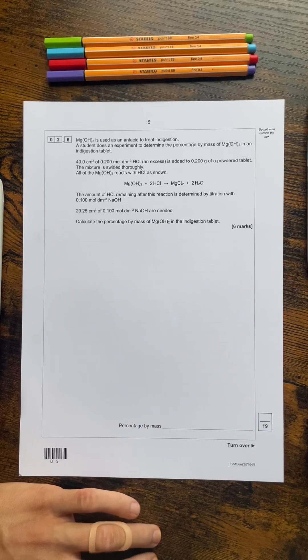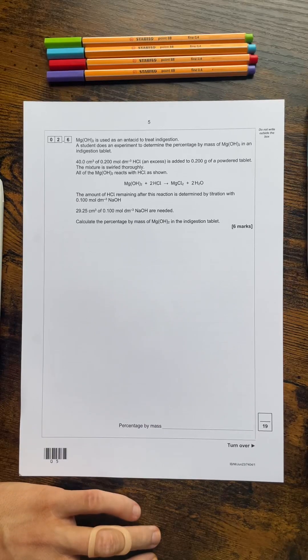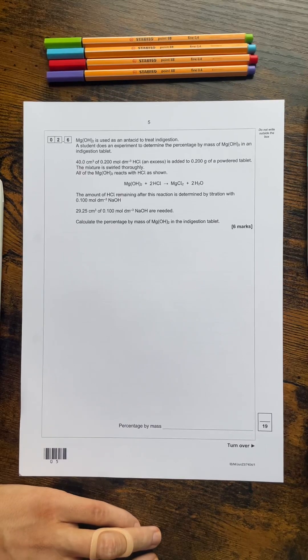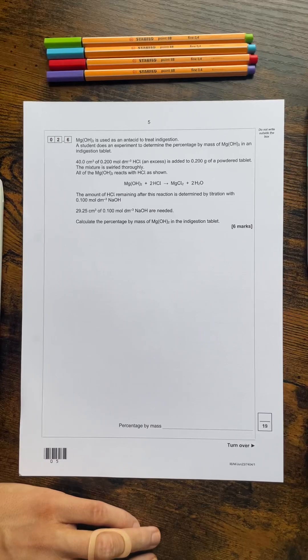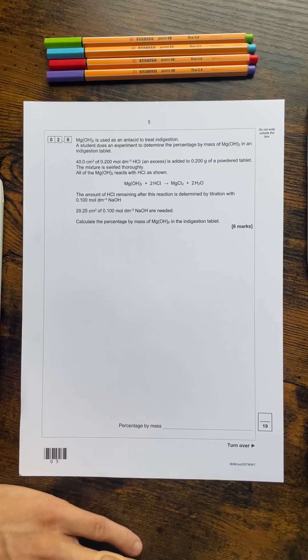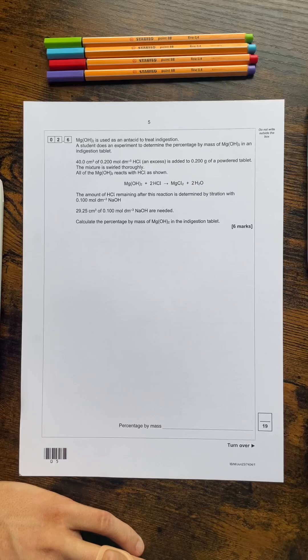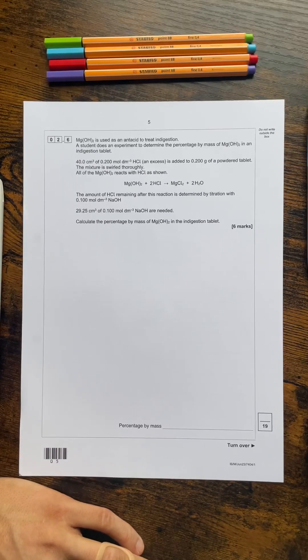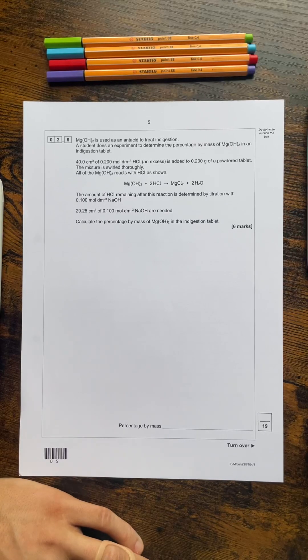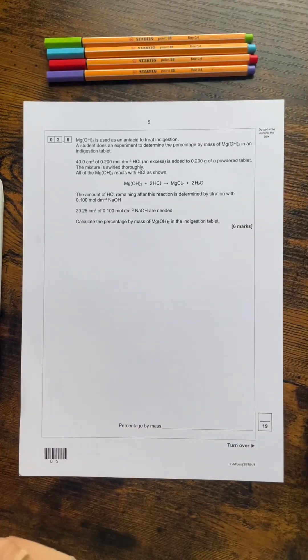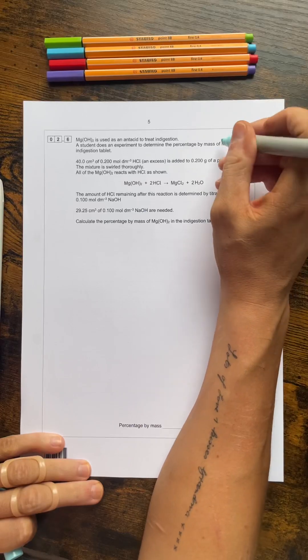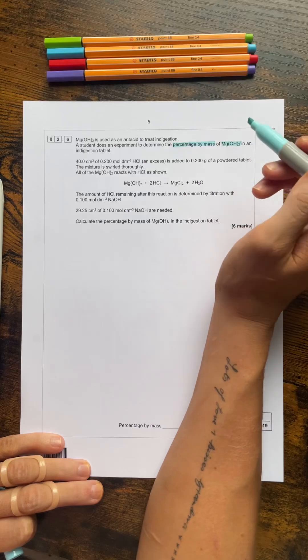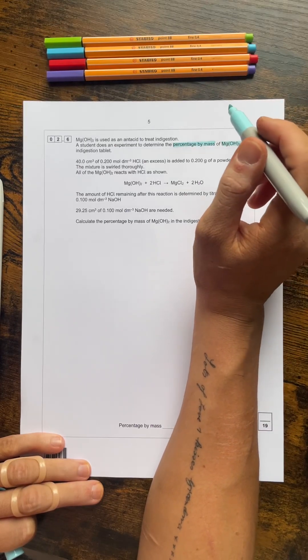So let's go from the top. It tells us that magnesium hydroxide is used as an antacid to treat indigestion and that's knowledge that you'll also need by the way for group 2 chemistry. We're told that a student does an experiment to determine the percentage by mass of magnesium hydroxide in an indigestion tablet. So first thing I'm going to highlight is my magnesium hydroxide in light blue. So we've got to work out the percentage by mass of that in the indigestion tablet.